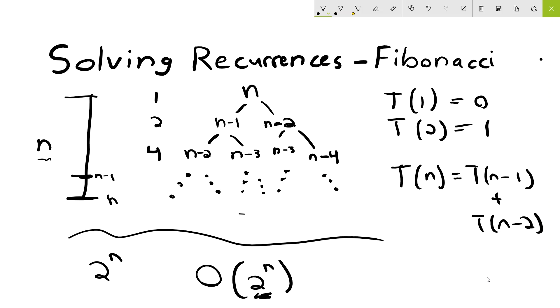So our final runtime for this algorithm is O(2^n). So that is the runtime to calculate the nth Fibonacci number. Thank you for watching.